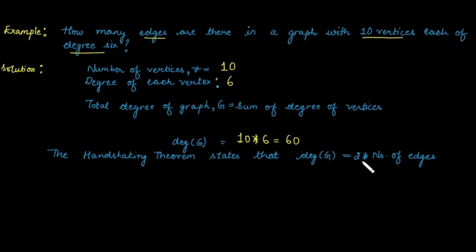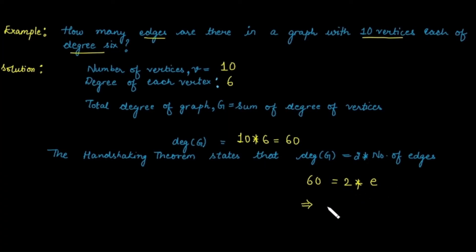Now we can use the handshaking theorem to calculate the number of edges, since the total degree equals 2 times the number of edges. The total degree is 60, so let the number of edges be e. This gives e = 30. So there are 30 edges in a graph with 10 vertices each of degree 6.